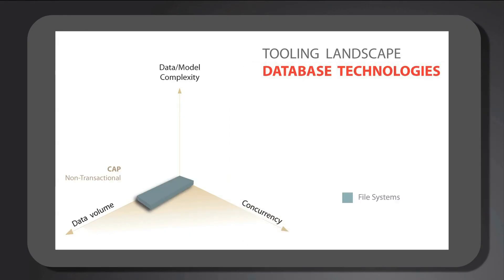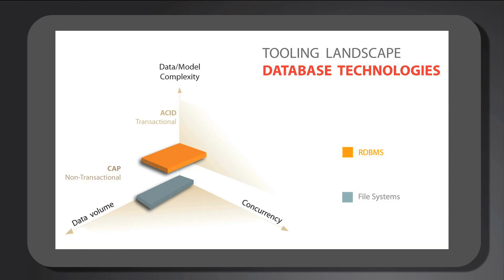Several database technologies are addressing these growing needs. File systems and advanced storage solutions can work well, even for large amounts of data, so long as there is little or no concurrent access to the data and there are no requirements for queries or referential integrity — for example, in the Java language, you have serialization. SQL databases work well for applications that have transactional requirements and moderately complex data models, but they demonstrate that scalability, concurrency, and related performance are limited.